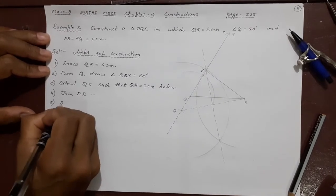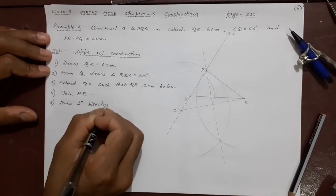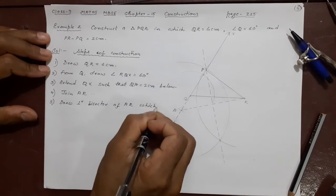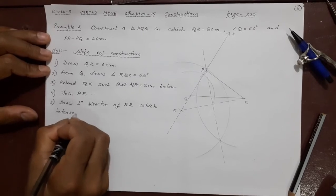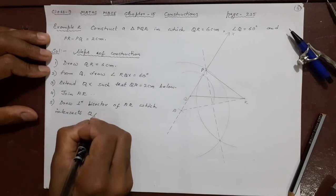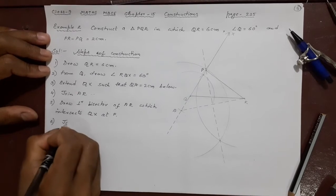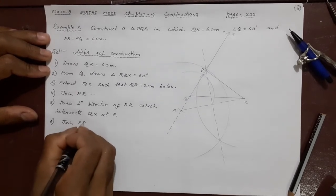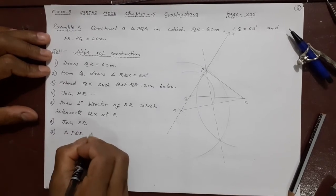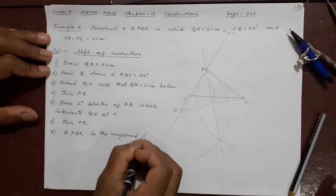Next step join PR. Next triangle PQR is the required triangle.